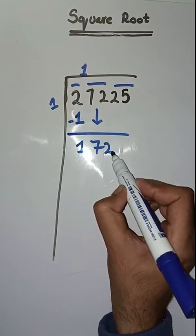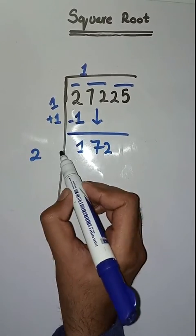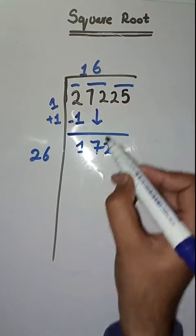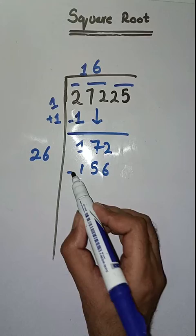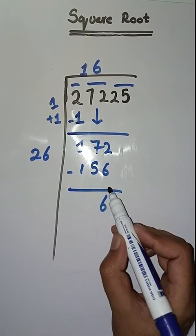Now take one plus one which is equal to two. Now we will take a number six. Twenty-six times six is one fifty-six. Minus, we get twelve minus six, six minus five is one.